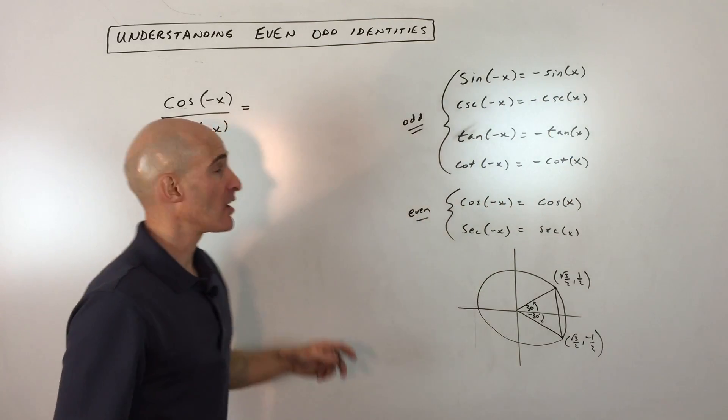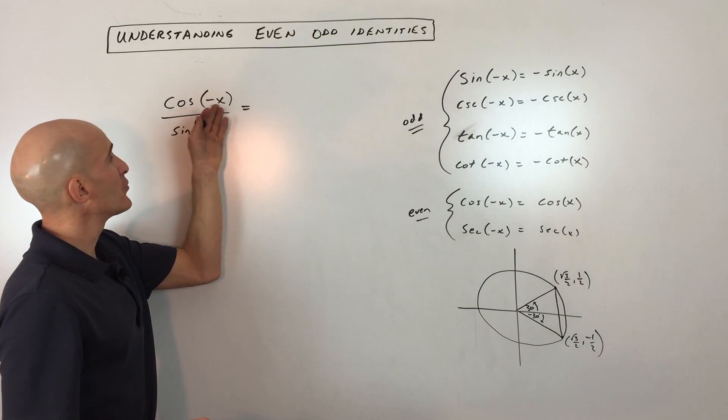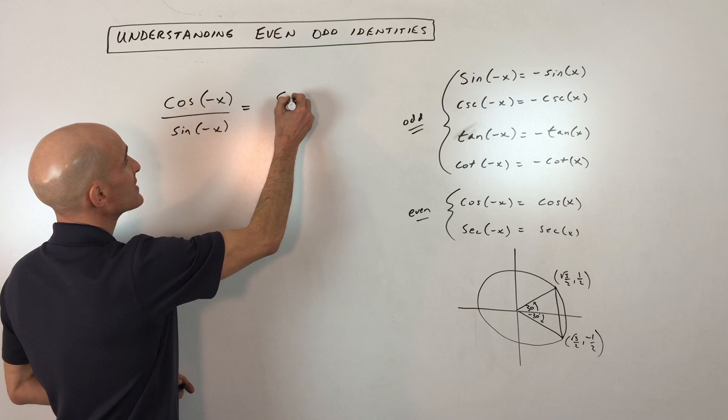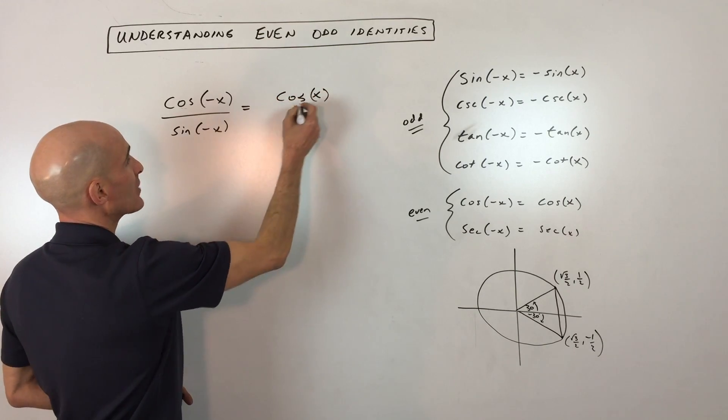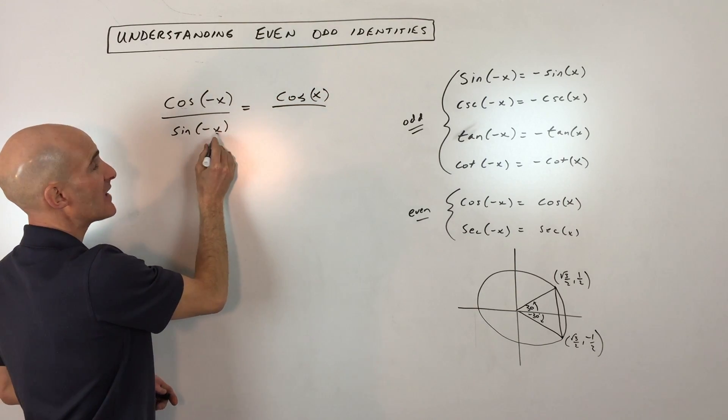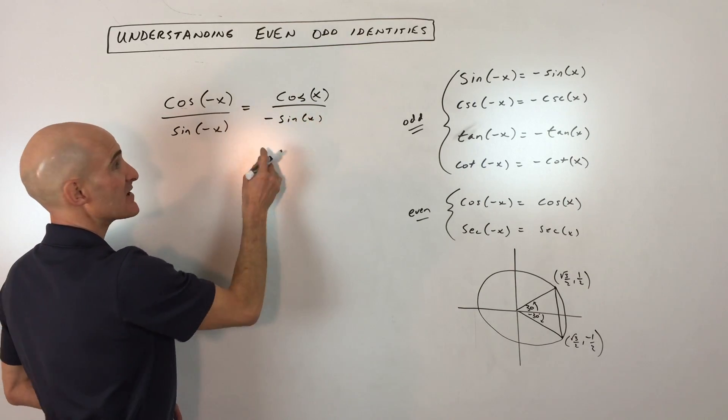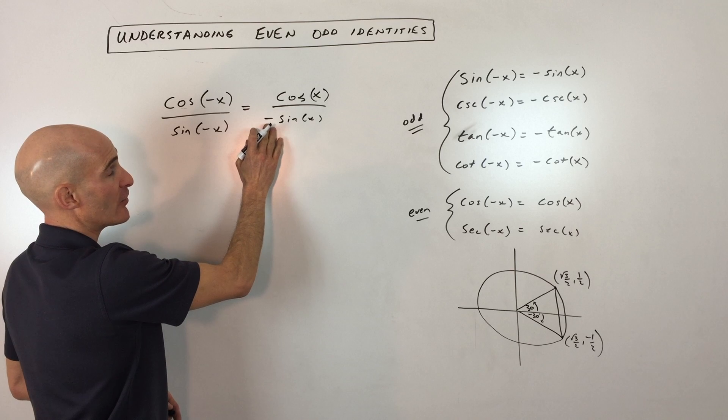So let's look at an example, and I'll show you how this works. Say you have cosine of negative x. Well, we know that's equal to cosine of positive x, the positive angle. The sine of negative x is equal to sine of x, but it has the opposite value, the opposite sign.